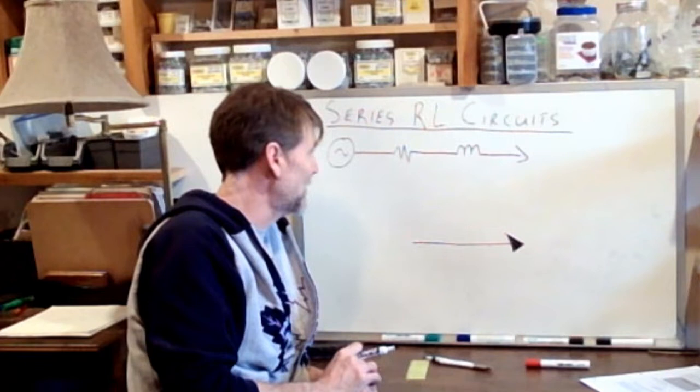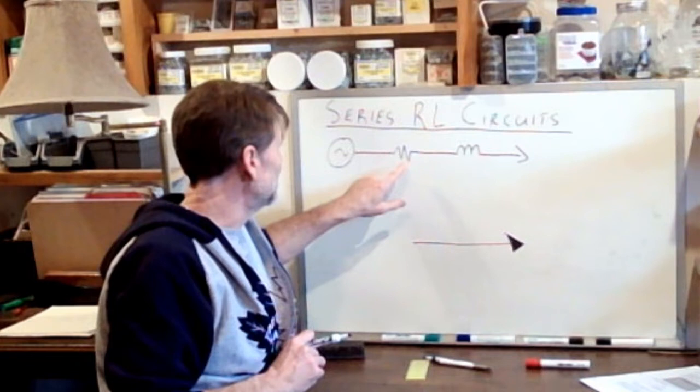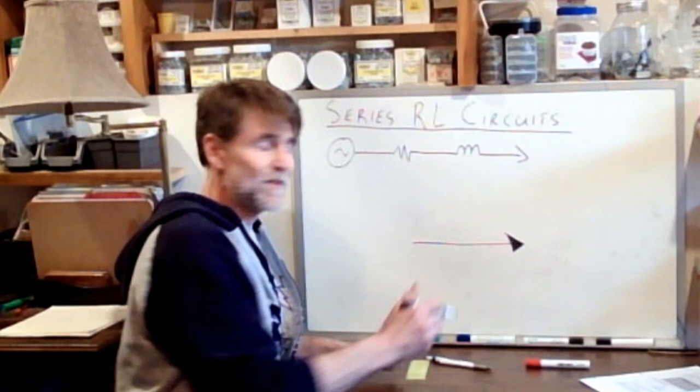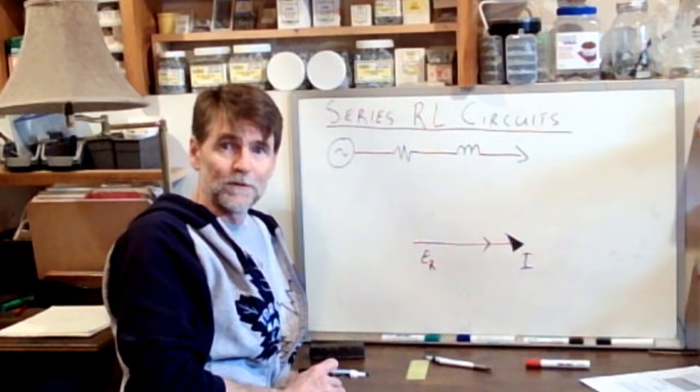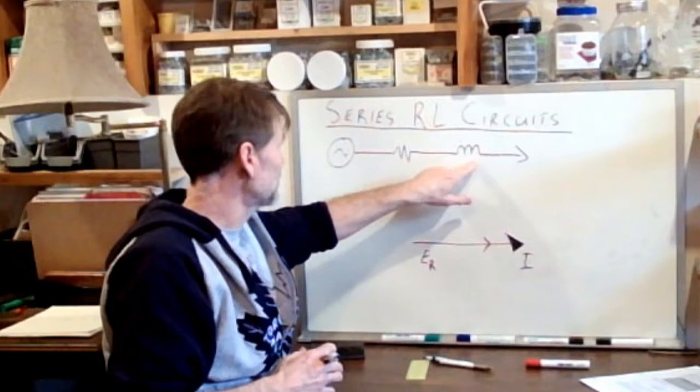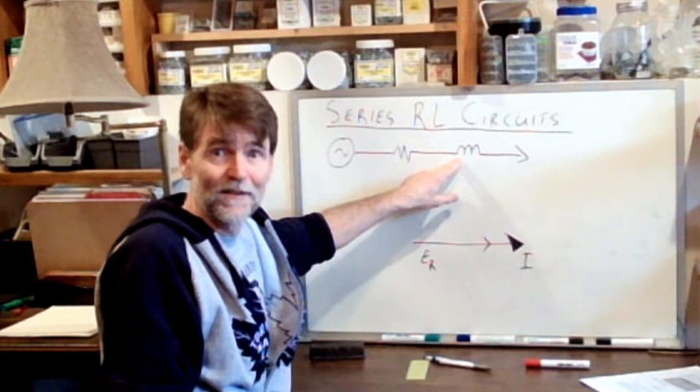And now we have to place the other vectors in relation to that. So there is a voltage vector that represents the voltage drop across the resistor. And because it's just a resistor, there is no phase shift taking place. The voltage is in phase with the current. So we can draw the voltage vector right there. So this is current. This is E subscript R, or the voltage at the resistor.